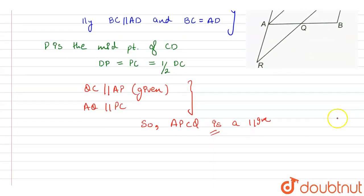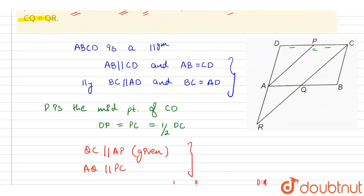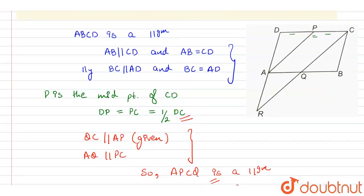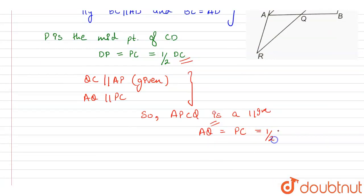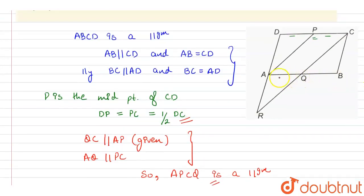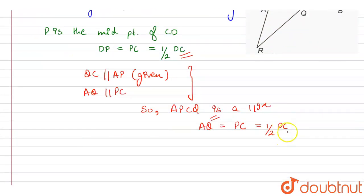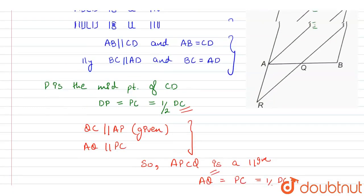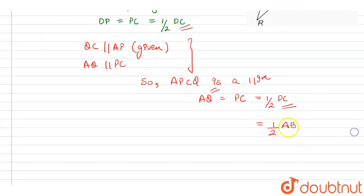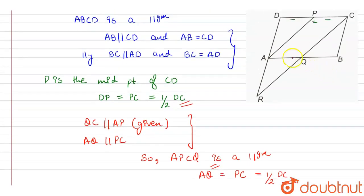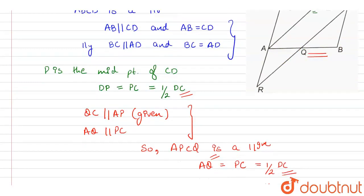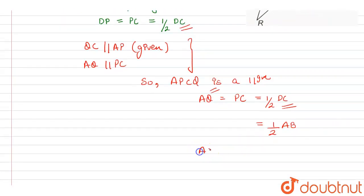Since APCQ is a parallelogram, AQ is equal to PC. But PC is equal to half of DC, and since ABCD is a parallelogram, DC is equal to AB. So AQ equals half of AB, which also equals BQ. Therefore, AQ is equal to BQ.